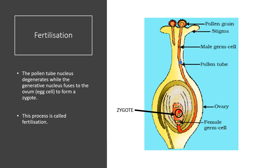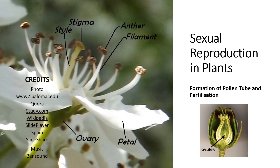Once the pollen tube reaches the ovary and bursts, it releases the nuclei. The pollen tube nucleus will degenerate, while the generative nucleus fuses with the ovum or egg cell to form a zygote. This process that occurs inside the ovule is called fertilization. We have now discussed the formation of the pollen tube and fertilization.